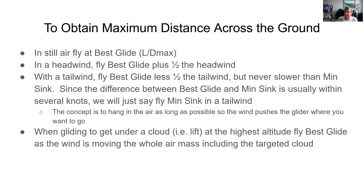In a headwind, fly best glide plus half the headwind. In a tailwind, conversely, fly best glide less half the tailwind — but again, never slower than min sink. Since the difference between best glide and min sink is usually only several knots, in a tailwind we just say fly min sink. The concept is you hang in the air, you loiter, just hang there as long as possible and let the wind push you where you want to go.